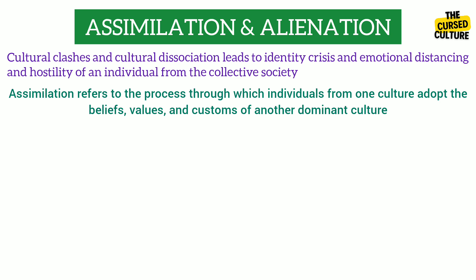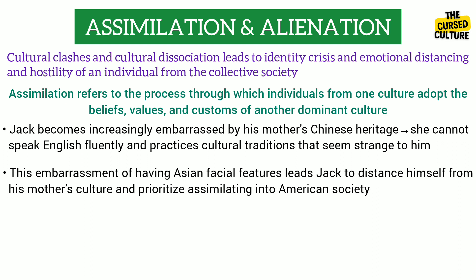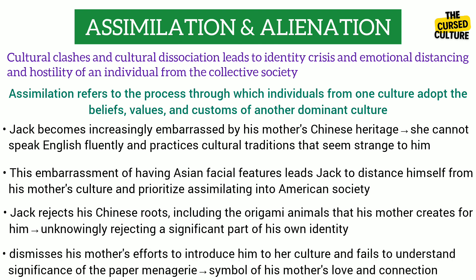In The Paper Menagerie, from a young age, Jack is exposed to both American and Chinese cultures. But as he grows older, he becomes increasingly embarrassed by his mother's Chinese heritage, especially because she cannot speak English fluently and practices cultural traditions that seem strange to Jack. This embarrassment of having Asian facial features leads Jack to distance himself from his mother's culture and prioritize assimilating into American society. He rejects his Chinese heritage, including the origami animals that his mother creates for him. In doing so, Jack unknowingly rejects a significant part of his own identity. He dismisses his mother's efforts to introduce him to her cultural traditions and fails to understand the profound significance of the paper menagerie as a symbol of his mother's love and connection.